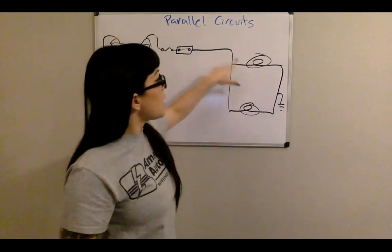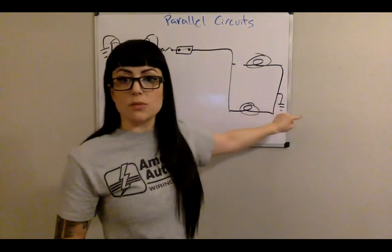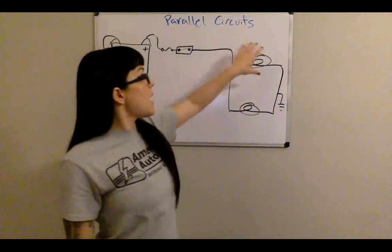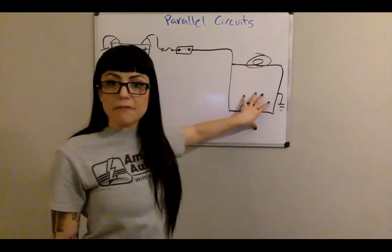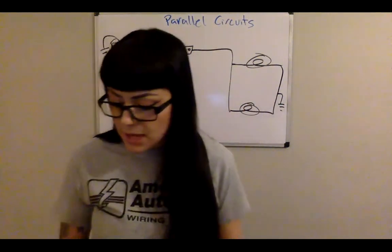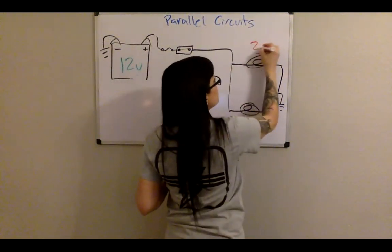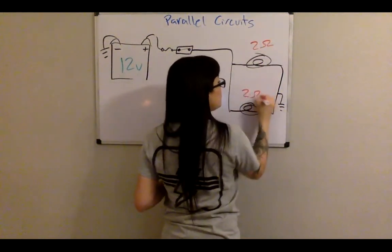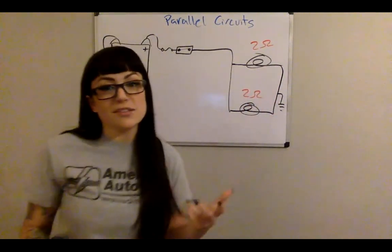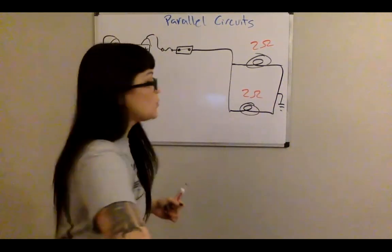Let's do an example: two ohms on this branch and two ohms on this branch. In a series circuit we'd add those to get TCR, but that's not the case here. To get TCR in a parallel circuit there are two ways. I'll show you one way with a formula — it's a little harder — and also the easier way I prefer, called the hand method.